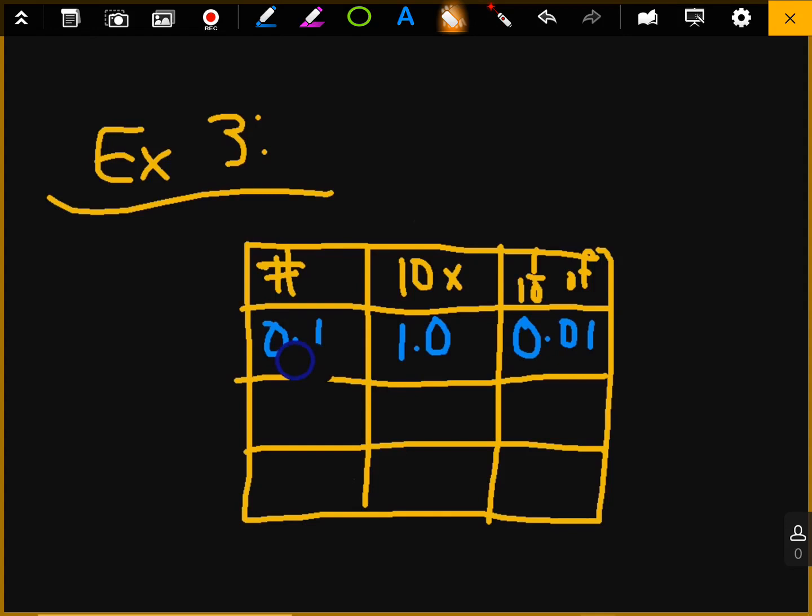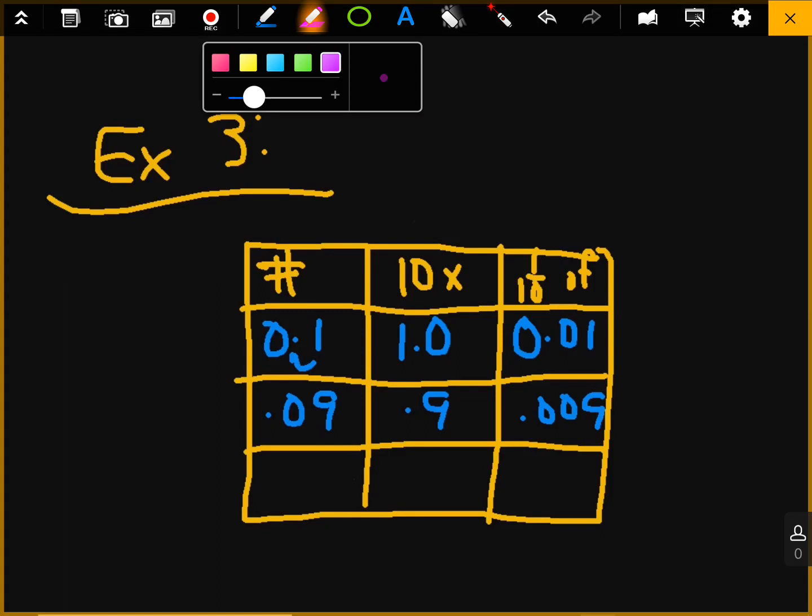Let's do another one. Let's do 0.09. Well, that's 10 times the number 0.9, and 1 tenth of that number is 0.009. So 1 tenth means it's going to go to the right, because it's smaller, and 10 times means it's going to go to the left, because that number will be bigger.